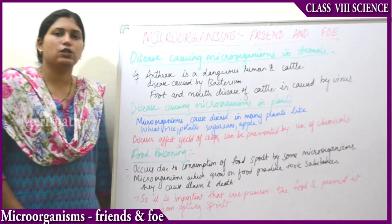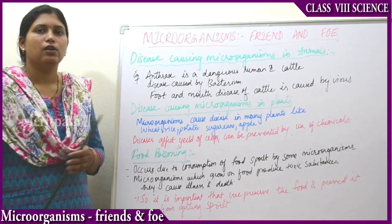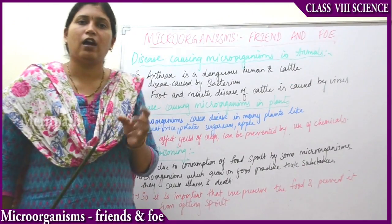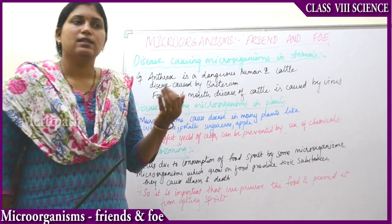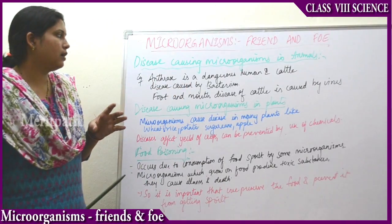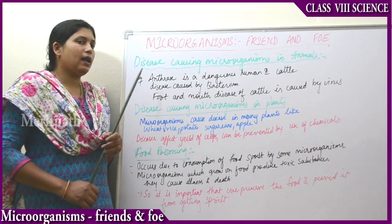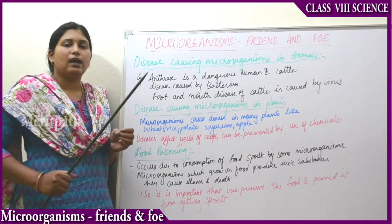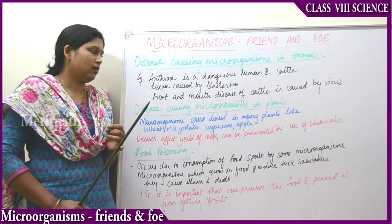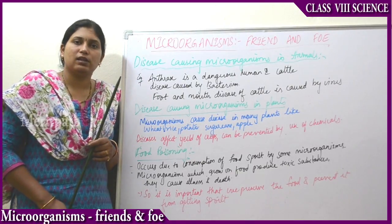Next is disease-causing microorganisms in animals. Animals also get affected by harmful microorganisms. Some diseases occur in the body because of harmful microorganisms. For example, anthrax disease — anthrax disease affects both humans as well as cattle, and it is a disease caused by bacteria.